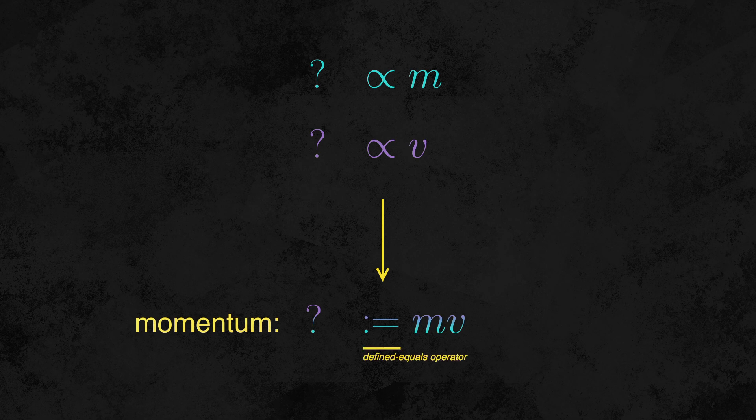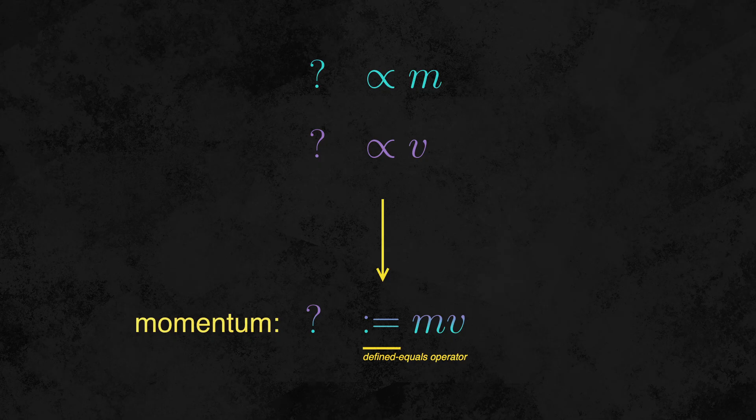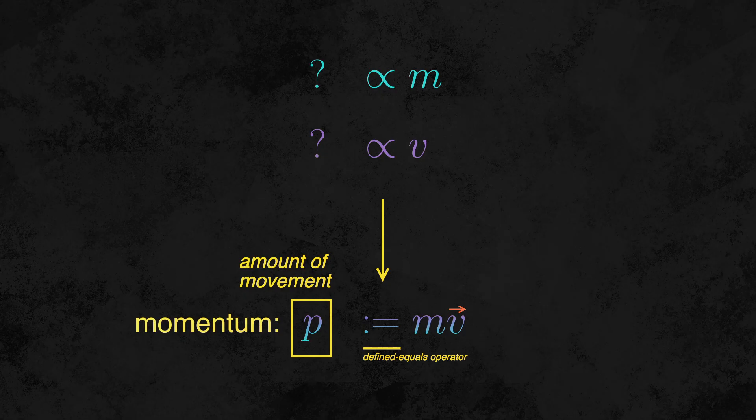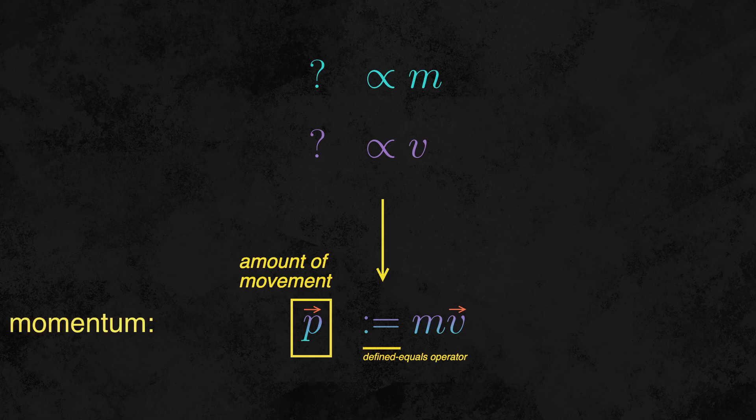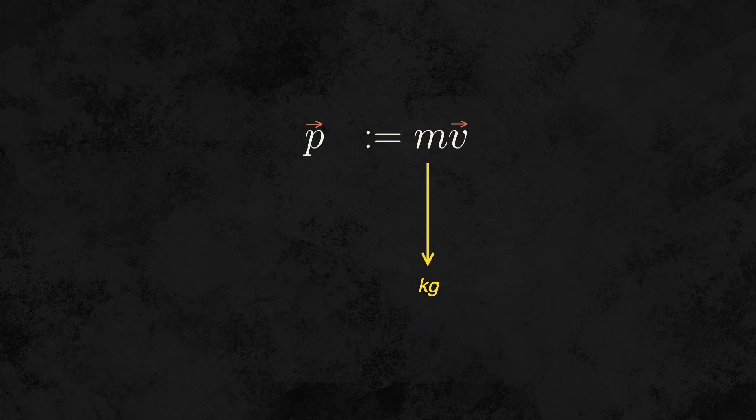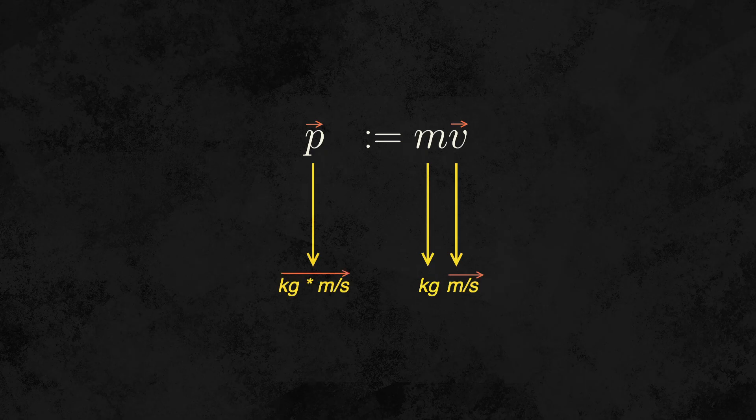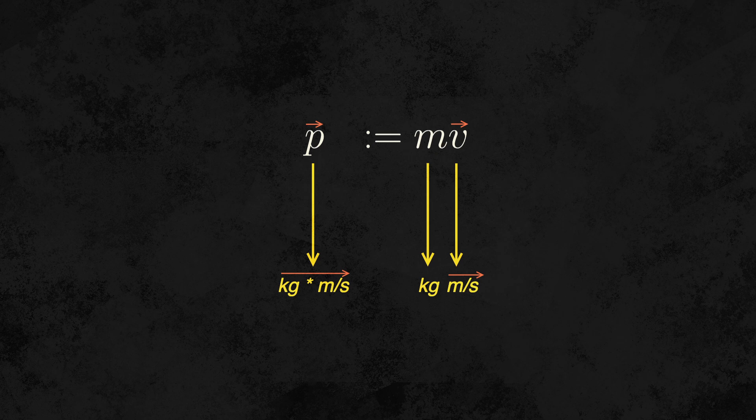In fact, in French, momentum is called quantité de mouvement, which literally means amount of movement. Since velocity is a vector, momentum is as well. An object has momentum in a particular direction. In this way, it acts kind of like velocity itself. Since we're multiplying mass with velocity, the units of momentum are kilograms times meters per second. We can also see that if we increase the mass of an object, or its velocity, or both, momentum goes up. This is a good illustration of what momentum is actually measuring.